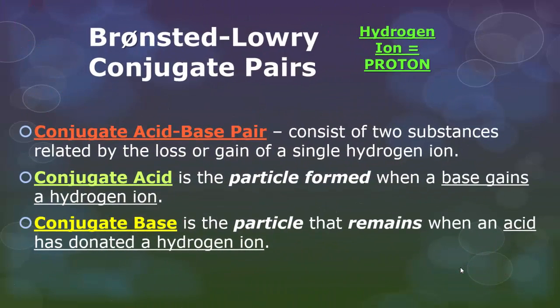Again guys, we'll be using the word proton, okay? Proton again is just to represent your hydrogen ion. So in the Bronsted-Lowry theory we have these things called conjugate pairs and the conjugate pair is the two substances that are related by the loss or gain of that single hydrogen ion.